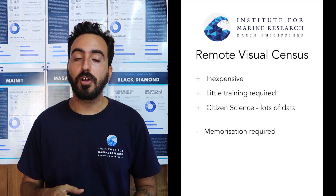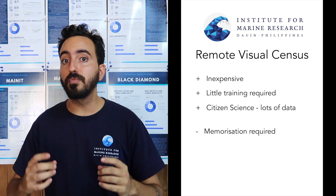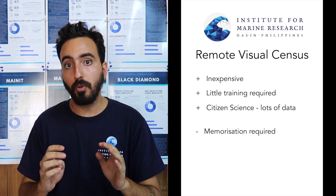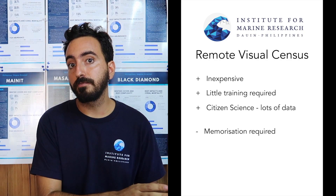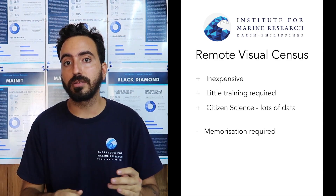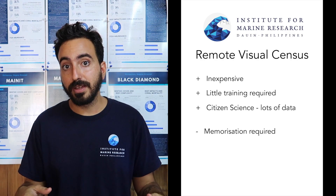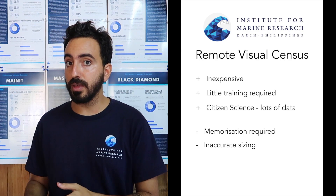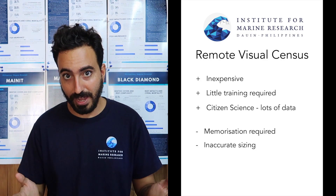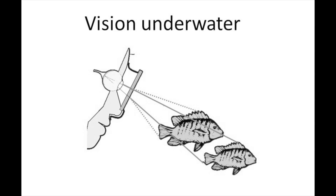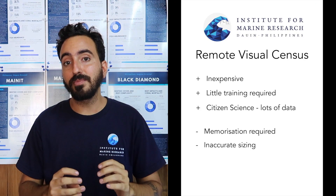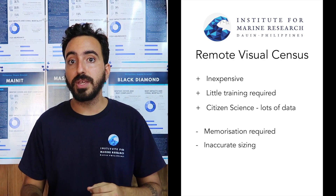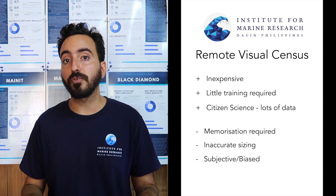The cons of this method start with memorization. To identify fish underwater you need to memorize them, which means you either need an extraordinary memory or you have to pick and choose which fish or groups to identify, and that subjective selection can introduce measurement bias. Sizing is also really difficult underwater — masks make things look bigger and closer while distant fish appear even farther away. This means that between one surveyor and another, data can be wildly different for the same transect.